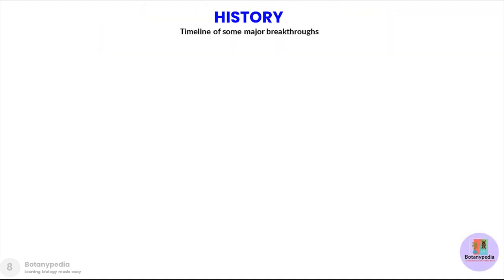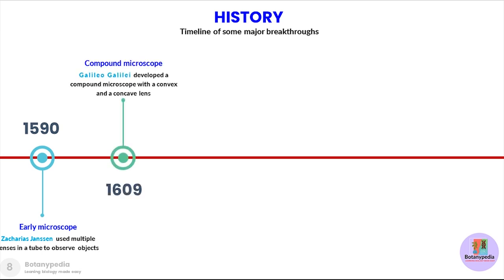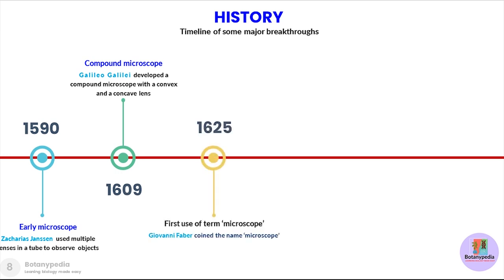Now let's have a snapshot of the major historical breakthroughs in this area. In 1519 Zacharias Janssen used multiple lenses in a tube to observe objects. In 1609 Galileo Galilei developed a compound microscope with a convex and a concave lens. Thereafter in 1625 the first use of the term microscope came into existence, coined by Giovanni Faber.